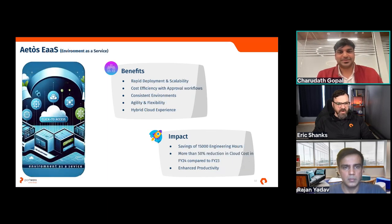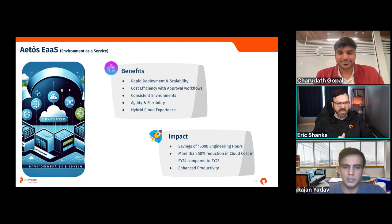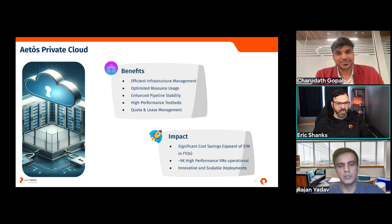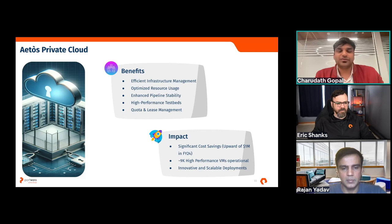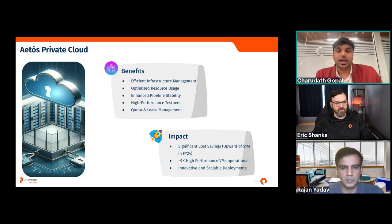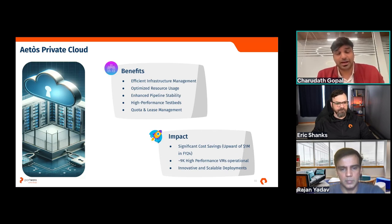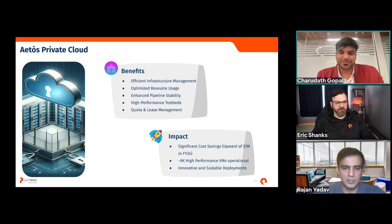Eric asked: where did that million-dollar saving predominantly come from? It's a combination of saving resources through lease and quota management, and making sure we use hardware efficiently. Some hardware was not being used properly at all — instead of buying new hardware, we repurposed existing hardware. Rajan added: we no longer need to continually buy more hardware because we're utilizing existing hardware more efficiently, and some teams were running high-scale cloud testing only because they didn't have reliable on-prem infrastructure — once we had the private cloud experience, we could move those workloads on-prem.